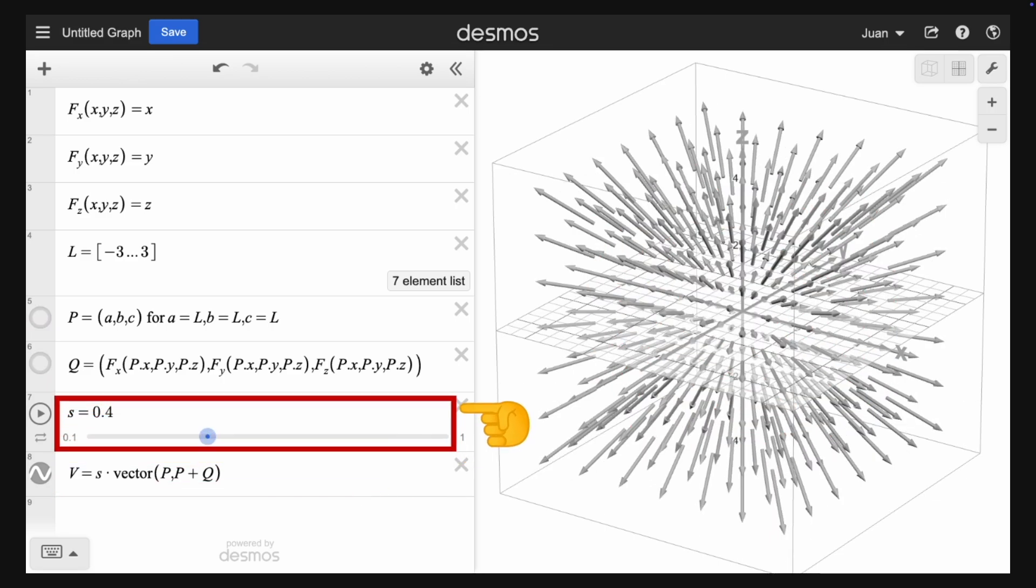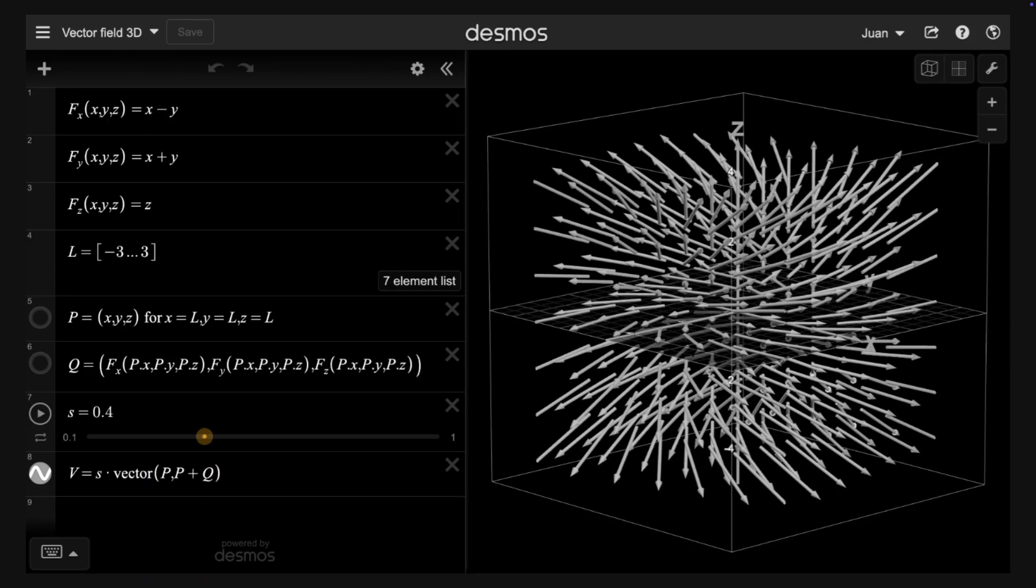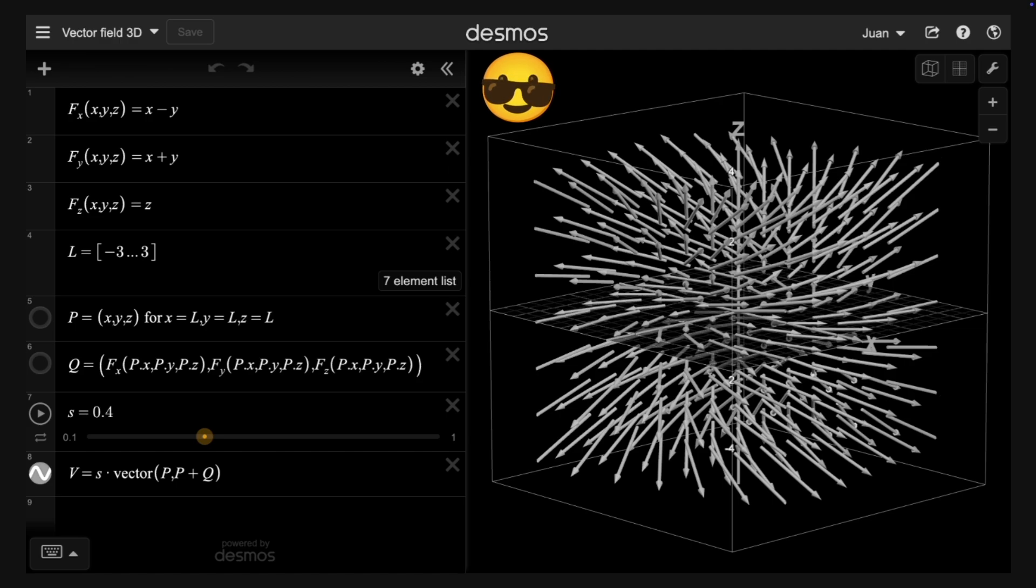We can hide all the points and modify the scale to adjust the size of the vectors. And there we have it. Now you can plot and explore vector fields in 3D with Desmos. If you want, you can try to do the 2D version. You just need to make a little change in the previous construction.